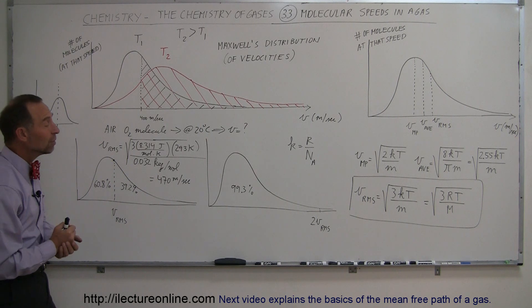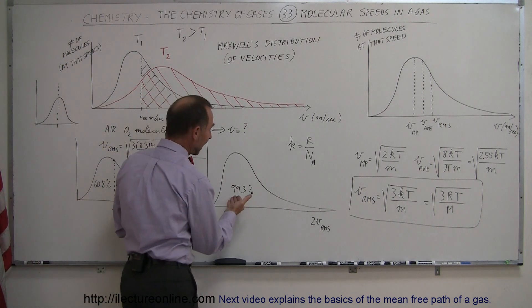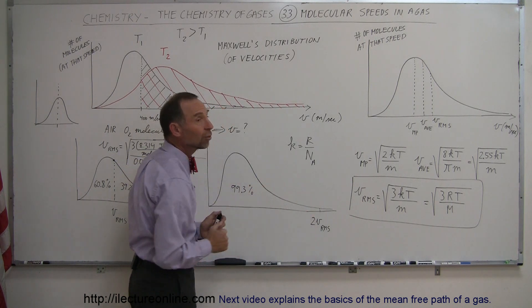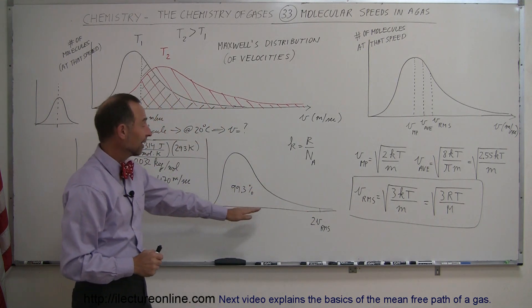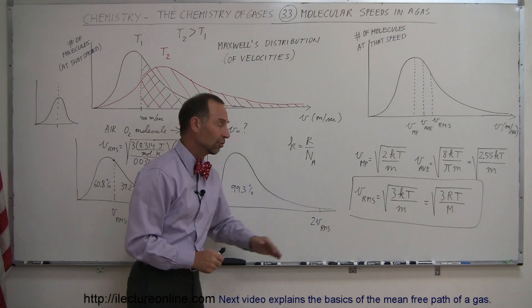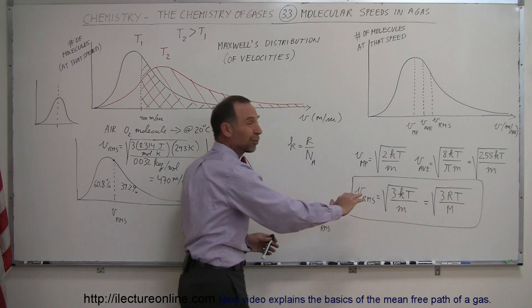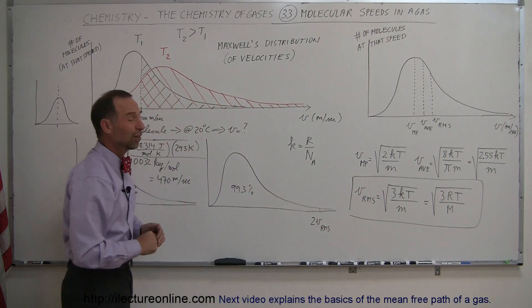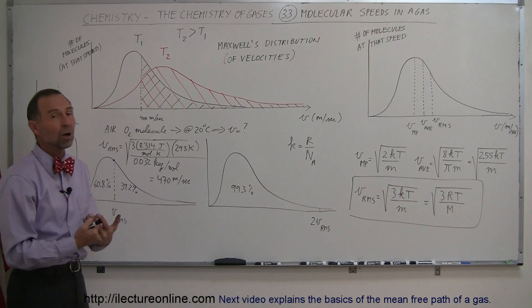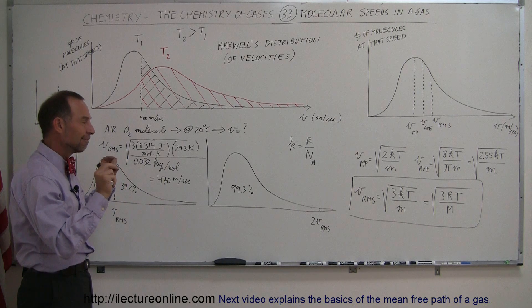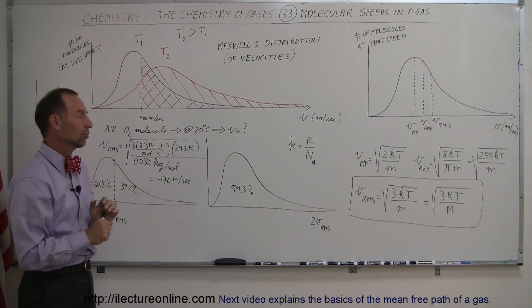What about twice the root mean square velocity? Notice that 99.3% of all molecules travel slower than twice the root mean square velocity, which means that less than 1% actually travels faster. There's just very few molecules that travel three, four, or five times the root mean square velocity, and typically no molecules travel at six times the root mean square velocity—that is probability-wise almost impossible.